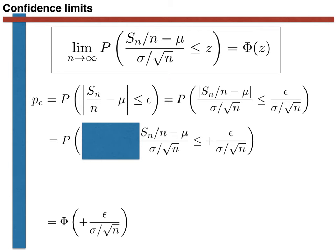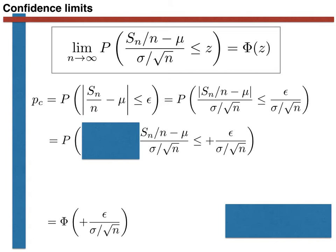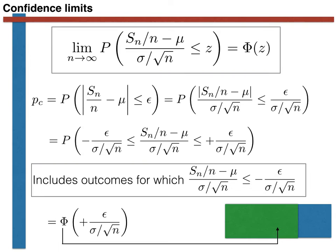To clarify what this probability is, let's draw a Venn diagram. The blue square denotes the full set of values that our random variable Sn over n minus mu, divided by sigma over the square root of n, can take. We are calculating the probability of generating a value less than or equal to epsilon over sigma over the square root of n, indicated by the green square. However, in the probability we have calculated thus far, we have included outcomes for which Sn over n minus mu divided by sigma over the square root of n is less than or equal to minus epsilon over sigma divided by the square root of n, represented by the purple square.